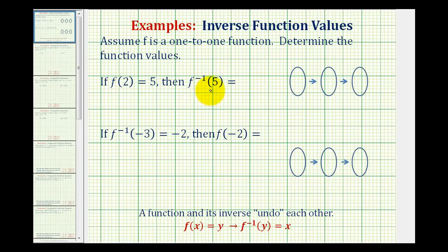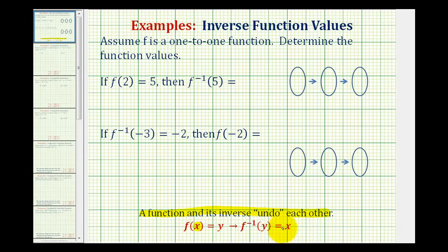The main thing to remember about these problems is a function and its inverse undo each other, which means if f of x is equal to y, and if we make the output y the input into f inverse, the output will be x. Notice how these two functions undo each other because the original input was x, and the final output of the inverse function is also x.